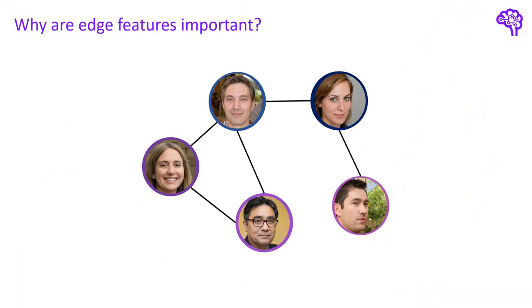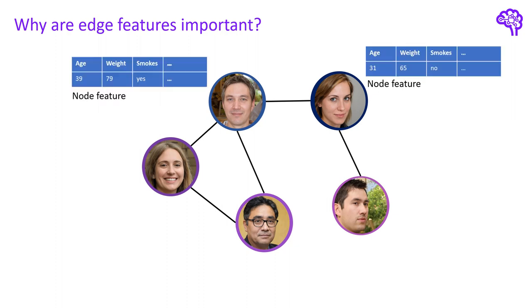Let's start with the question why edge features are even important. Isn't the information in the nodes sufficient to create meaningful embeddings? A typical graph can be a social network like the one shown here. Node features in our graph are for instance the age of the people, their weight or whether they smoke. Additionally, we know for each of our nodes if they like the movie Hobbit.